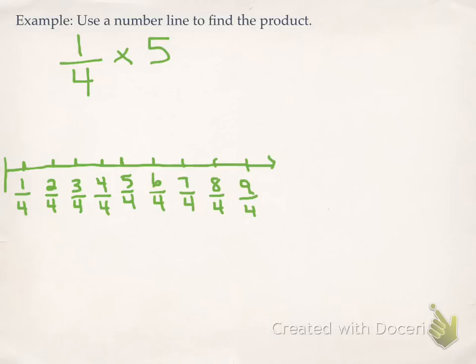So the question says 1 quarter times 5. So I need 5 groups of 1 quarter. Well, there's 1 group, there's 2 groups, 3 groups, 4 groups, and 5 groups would put me right here.